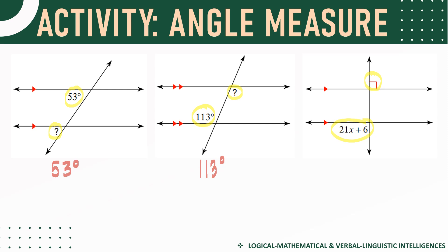Next figure: the relationship is corresponding angles, and we know corresponding angles have the same measure, so this one is also 53 degrees. Moving on: this 113 degrees and this angle are actually alternate interior angles, hence they have the same angle measure. Then we have 90 degrees and 21x plus 6. The relationship is alternate exterior angles, which have the same measure, so 21x + 6 equals 90 degrees.